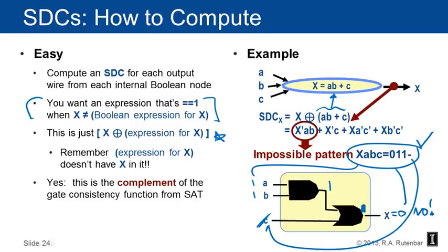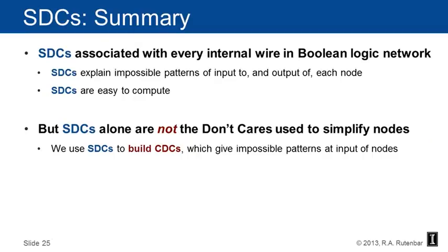So where are we? Satisfiability don't cares are associated with every internal wire in a Boolean logic network. They explain impossible patterns of inputs to and the output of each node, and the good news is that they are easy to compute. However, satisfiability don't cares are not really the don't cares used to simplify nodes — they are the foundational elements needed for the recipe to start computing the don't cares we actually use. We use the SDCs to build the CDCs — the controllability don't cares — which give impossible patterns at the inputs of nodes. Let's go see how to do that in the next lecture.